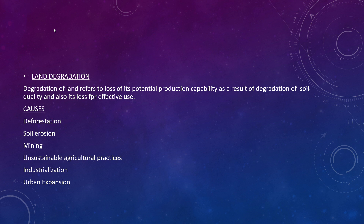Unsustainable agricultural practices include use of artificial fertilizers, which was discussed in Module 1 Part 2. Industrialization leads to the development of many industries, and as a result, roads, rails, and metro lines are constructed which degrade the land further. Urban expansion is inevitable, but development should not spoil the environment; we should use land sustainably so that future generations can enjoy the same resources.